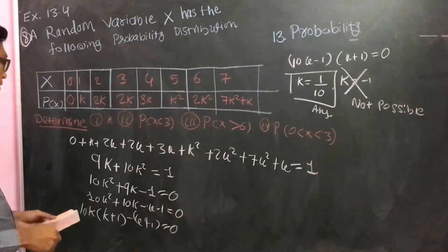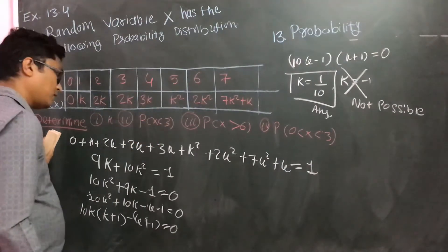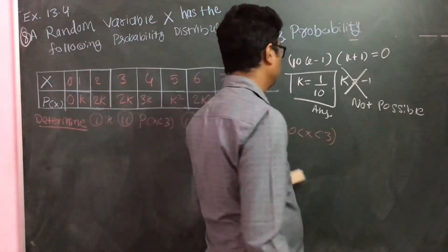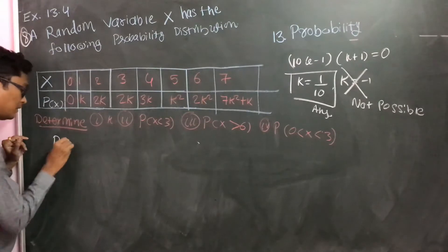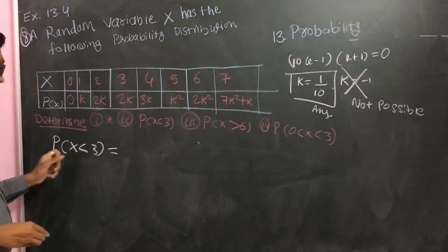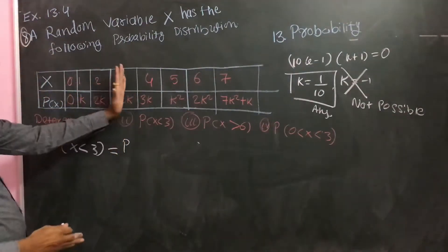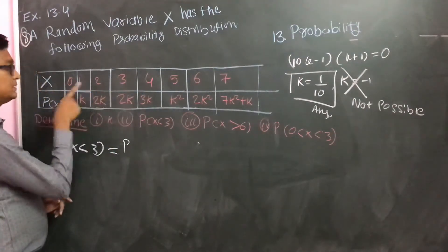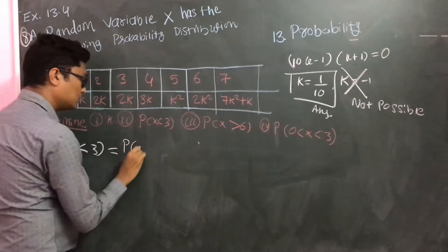Next part, we have to find out what is P of X less than 3. So probability of X less than 3 means we have to add all the possibilities of X less than 3. So X less than 3 means P(0) plus P(1) plus P(2).